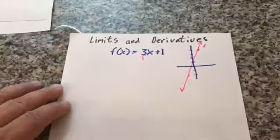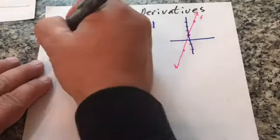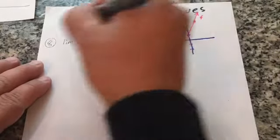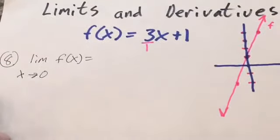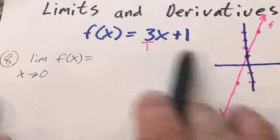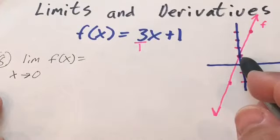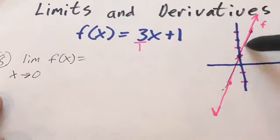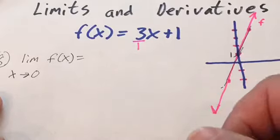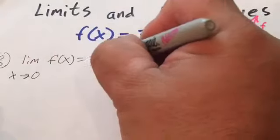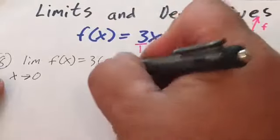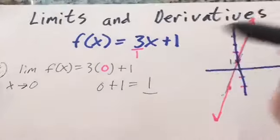Number eight: the limit as x approaches zero of f of x. There are two ways to do this — plug zero in for x, or go to the graph and notice that as x comes from the left and right, it squeezes to that y value. The limit is that y value. Plugging in: 3 times zero plus one equals one. The limit as x approaches zero of f of x equals one.